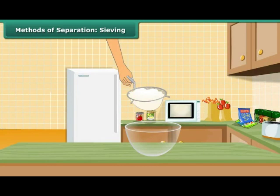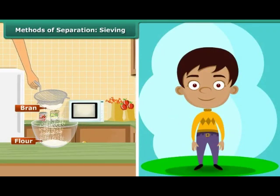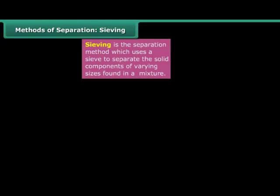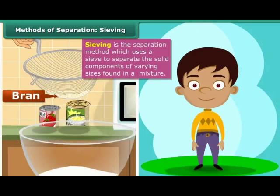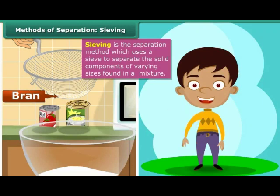Children, have you seen how your mother removes bran and other impurities from flour? They separate the coarse bran from the fine flour with the help of a sieve. This technique of using a sieve to separate the solid components of different sizes in a mixture is known as sieving. In this method, the mixture is placed on the sieve and shaken. Smaller particles pass through the holes of the sieve into the container placed below and are thus separated from the bigger particles that are retained in the sieve.